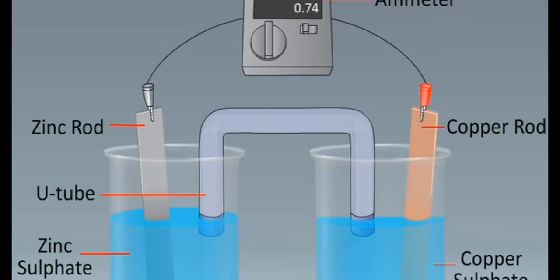The openings of the U-tube are plugged with some porous material, such as glass, wool, or cotton. The U-tube which connects the two glass beakers is called a salt bridge.